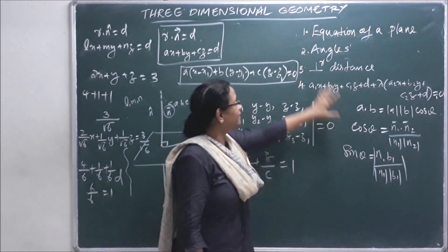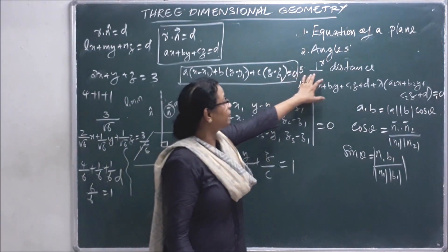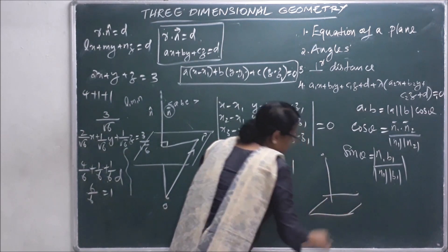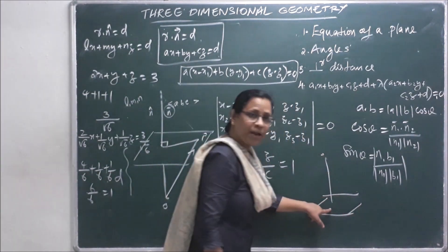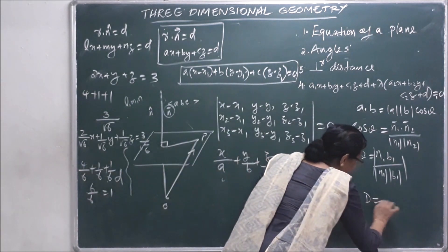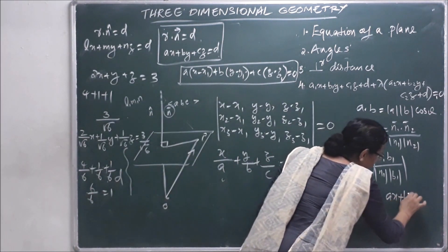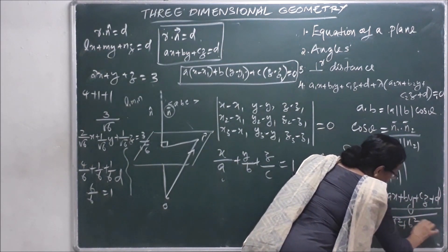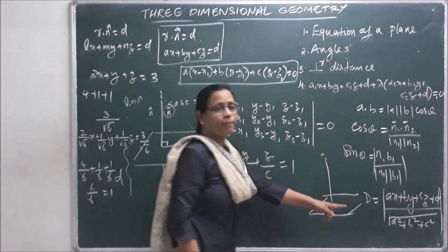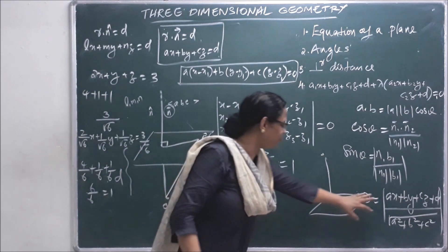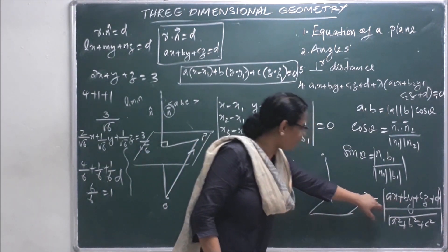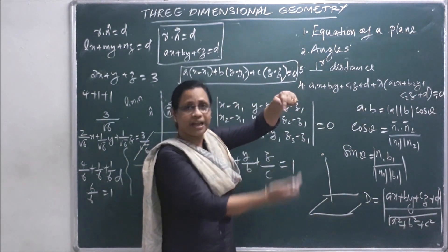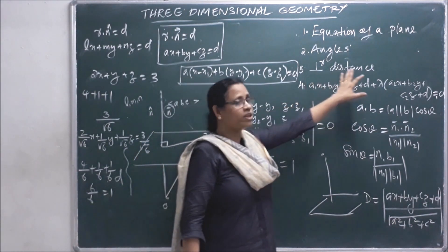This is the perpendicular distance from a point to a plane. The formula is: distance equals Ax plus By plus Cz plus D, divided by the square root of A squared plus B squared plus C squared. This is the formula for the perpendicular distance from a point to a plane.